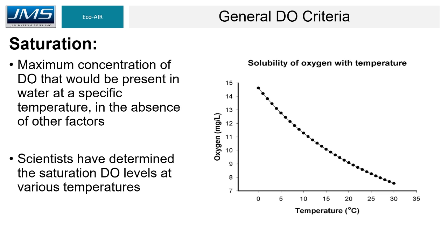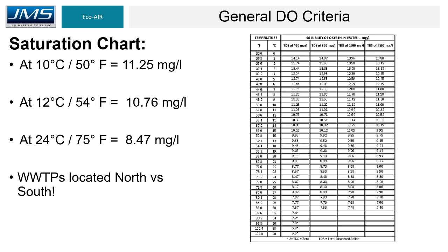Scientists have determined that DO saturation levels vary with temperature, as seen on this slide. At zero degrees Celsius, the saturation point for DO is approximately 15 milligrams per liter. As temperatures decrease, DO saturation increases rather significantly. The saturation chart here shows that at 50 degrees Fahrenheit the solubility of DO is 11.25 milligrams per liter, and at 75 degrees Fahrenheit it is 8.47 milligrams per liter. This means permits in warmer climates physically cannot be as high as those in colder climates because of that saturation limit.